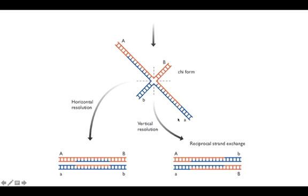So whether it is a vertical cleavage or horizontal cleavage, at the end they always produce a DNA molecule that contains its own nucleotides plus nucleotides adopted from the other DNA molecule. This is how recombination happens.